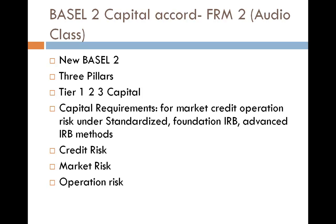We now move to the Basel 2 Capital Accord. This is a little tricky, so you have to follow carefully. We are going to look at the three pillars, the three-tier capital structure. We are going to understand the standardized, foundation, and advanced internal rating-based methods for each of the credit, market, and operational risk.